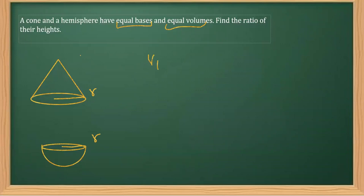Further, as I can see, their volumes are also equal. That means whatever is the volume of the first figure, say V1, is equal to V2. Let's say V1 is the volume of this and V2 is the volume of this.